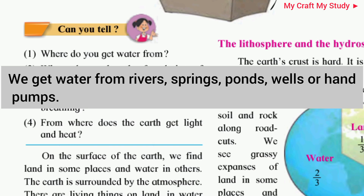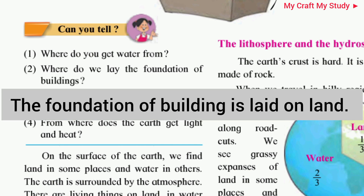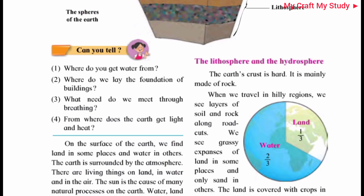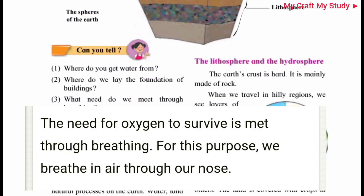First question: Where do you get water from? We get water from rivers, springs, ponds, wells, or hand pumps. Second question: Where do we lay the foundation of buildings? We lay the foundation of buildings on land.